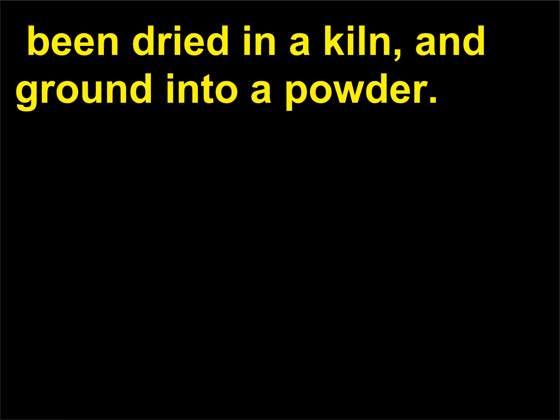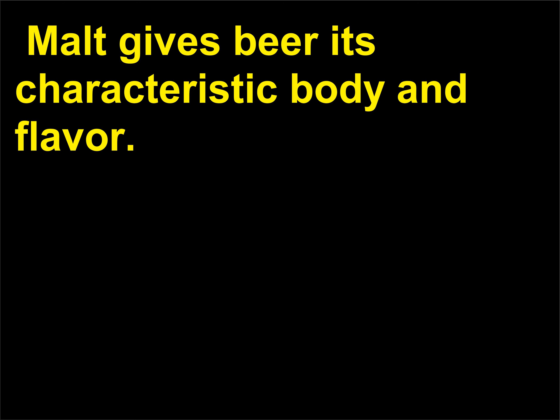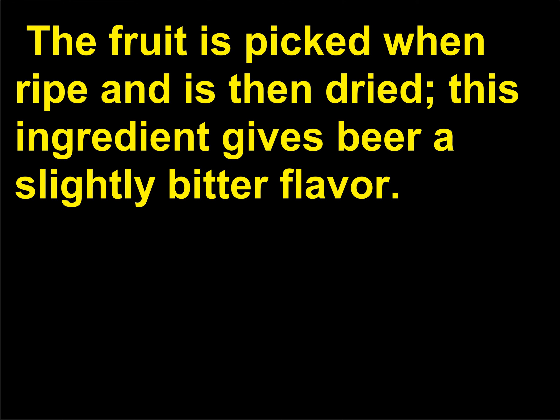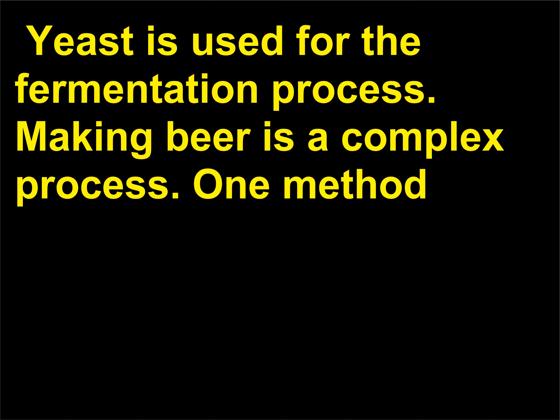Malt is produced from a grain, usually barley, that has sprouted, been dried in a kiln, and ground into a powder. Malt gives beer its characteristic body and flavor. Hops is made from the fruit that grows on the herb Humulus lupulus, a member of the mulberry family. The fruit is picked when ripe and is then dried; this ingredient gives beer a slightly bitter flavor.